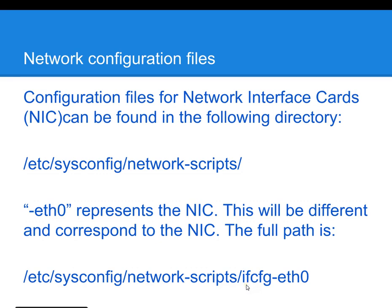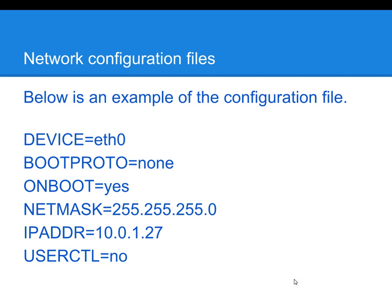The syntax for naming these files would be ifcfg for network configuration, dash, and then what comes after the dash depends on the network device you have installed in your system. So you can see in my system I have a network device called ETH0. This network interface card configuration file will look similar to what you see on the screen. You can expect to find the IP address, the netmask, the name of the device, and several other configuration items.